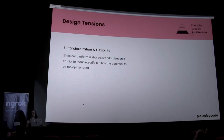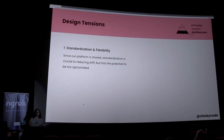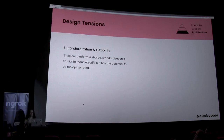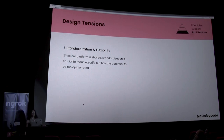The first and hardest design tension to balance is standardization versus flexibility. This is a tension that Go navigates really well in the language context, especially as it has grown in maturity. It is a relatively opinionated language, but it also has the flexibility that enables development across multiple contexts — whether that's infrastructure management, CLIs, or service development. That's actually part of why I chose to speak on Go specifically over Python or Java. Platform engineering spans many aspects of the development cycle, so Go makes organizational alignment a lot easier regardless of where your role is.